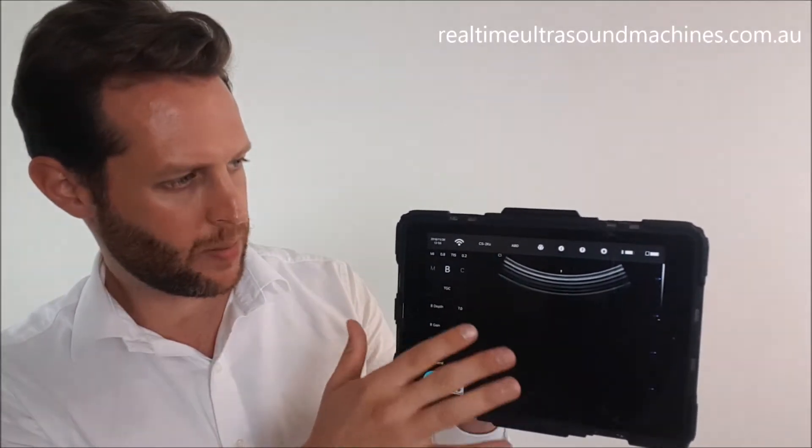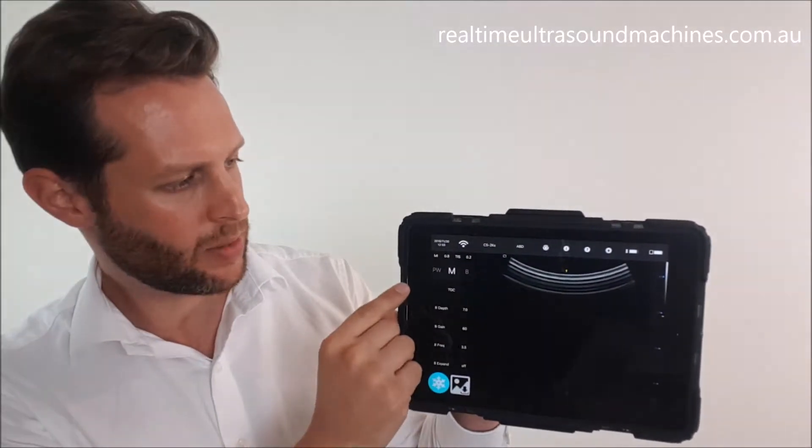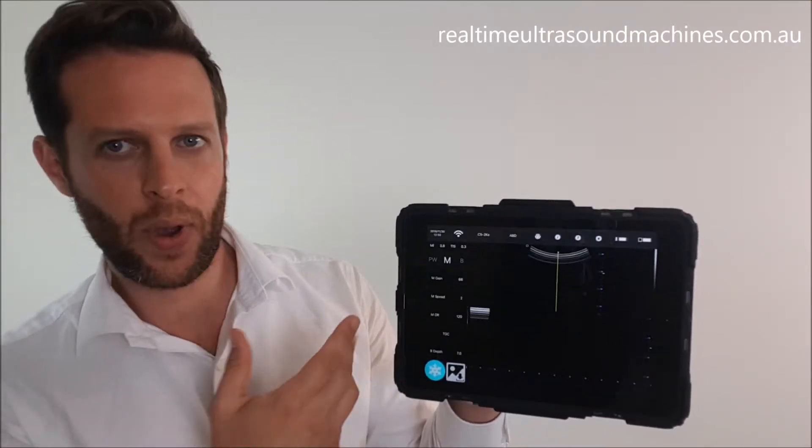On the black-and-white version, you've got two different modes to choose from: normal B-mode, which is what we're in at the moment, and M-mode. You can get to M-mode by sliding those mode keys at the top of the screen left or right. Wait a second or two and it will switch to that next mode you've selected.